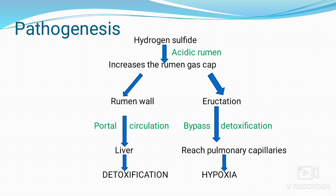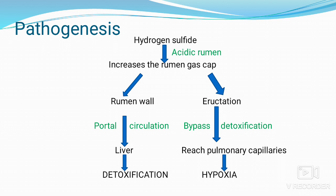Regarding the pathogenesis of sulfur-induced PEM: in the acidic rumen, hydrogen sulfide concentrations in the rumen gas cap increase. Hydrogen sulfide is absorbed through the rumen wall, reaches the liver via portal circulation, and gets detoxified by oxidation to sulfate. Alternatively, eructated gas is absorbed across the alveolar membrane into the pulmonary capillaries, causing hypoxia. Eructation efficiently bypasses liver detoxification, allowing hydrogen sulfide to reach the brain. Sulfate is reduced to sulfide, which combines with H⁺ ions to form hydrogen sulfide gas; when 60% of eructated rumen gas is inhaled, this is the main route through which hydrogen sulfide reaches systemic circulation and damages brain cells, ultimately leading to polioencephalomalacia.